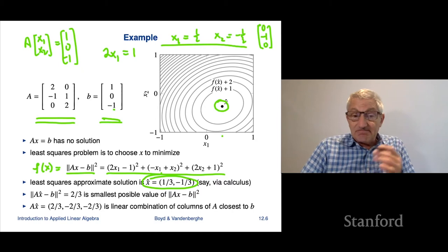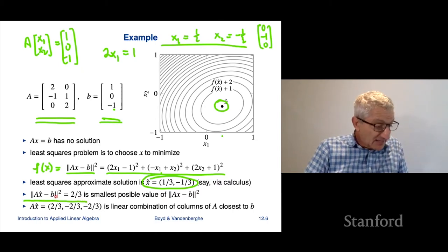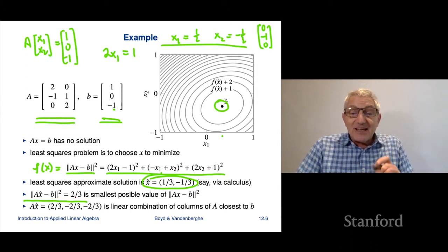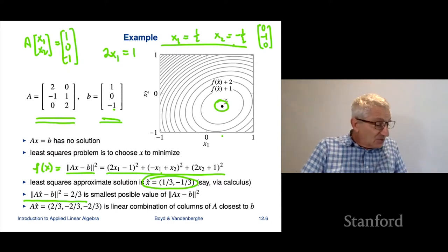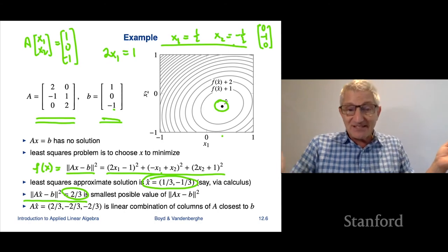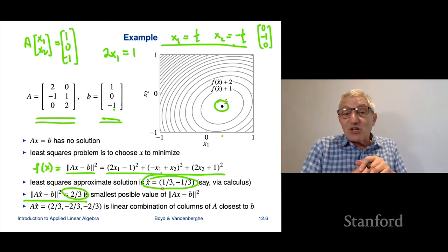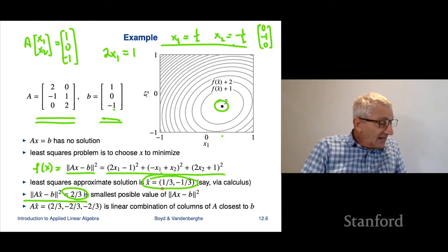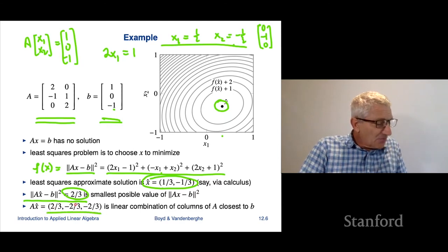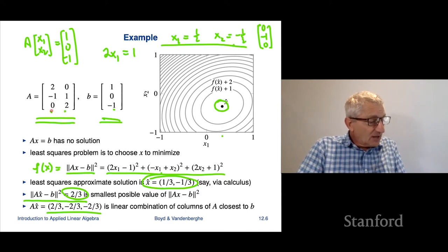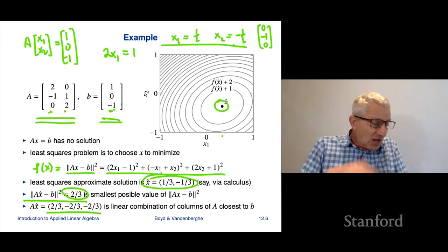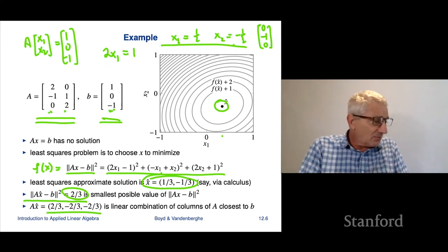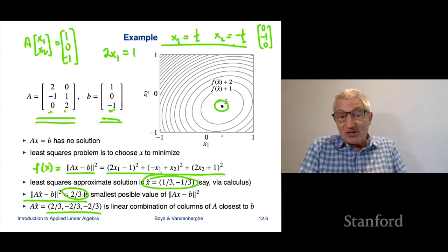The minimum value is ‖Ax-hat - B‖² = 2/3, and Ax-hat equals [2/3, -2/3, -2/3], which is the linear combination of the two columns of A closest to B. We can visualize it because it's two-dimensional, but in practice we're interested in problems with 20 or 20,000 variables — and we'll see that's all possible.